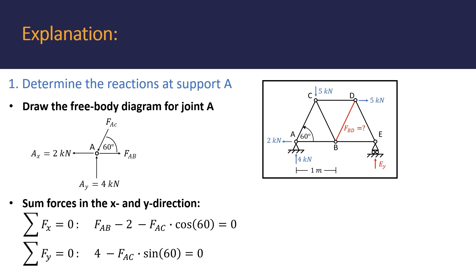This equation contains only one unknown, meaning we can solve for the force AC by rewriting the equation. Force AC equals 4 divided by sine 60, resulting in a value of 4.6188 kN.